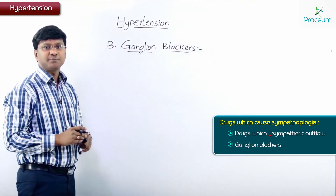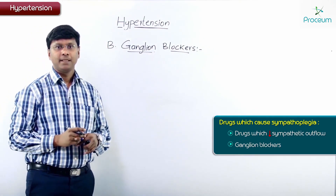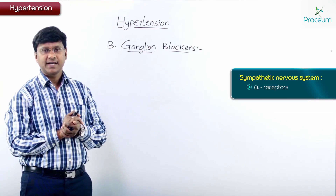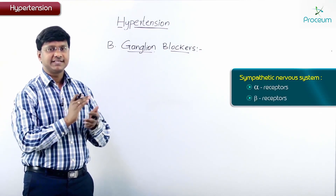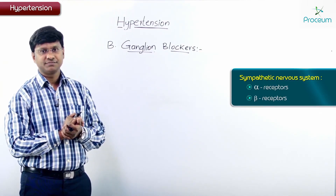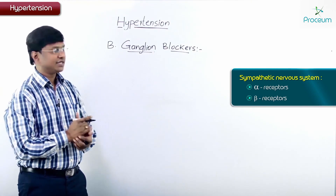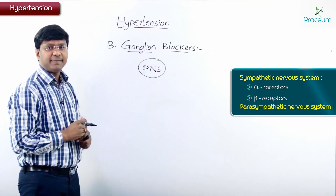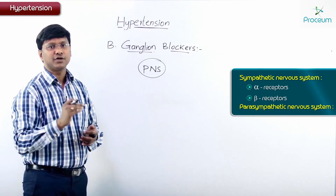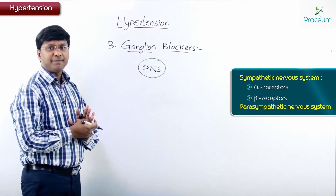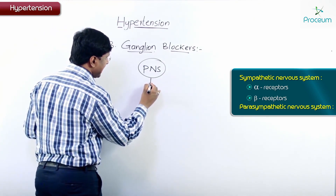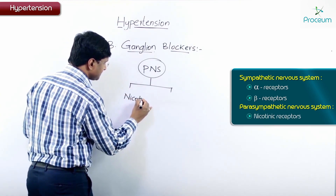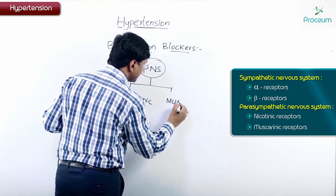Now, what do ganglion blockers do? Apart from alpha and beta receptors, which are the receptors for the sympathetic nervous system, we have the receptors for the parasympathetic nervous system, which is a part of the autonomic nervous system. This parasympathetic nervous system acts on nicotinic receptors as well as muscarinic receptors.